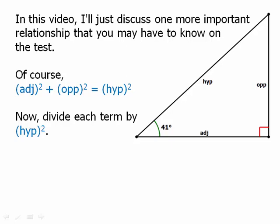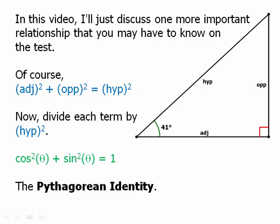We'll get adjacent squared divided by hypotenuse squared—well, adjacent divided by hypotenuse is cosine, and opposite divided by hypotenuse is sine. So we get cosine squared plus sine squared equals 1. And this is the Pythagorean identity.